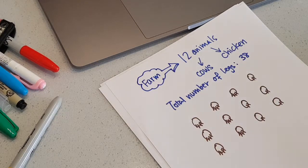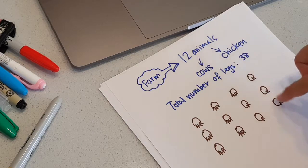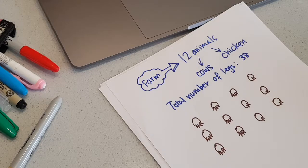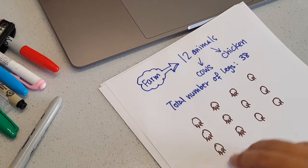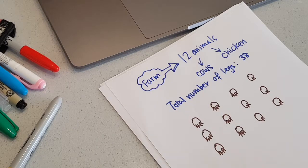Let me count again. I have 1, 2, 3, 4, 5, 6, 7. Seven of them have four legs. Seven times four is 28. Then I have 1, 2, 3, 4, 5. Five of them with two legs, so 10 legs. All together I have 28 and 10, I have 38. Yes, I got the correct answer.